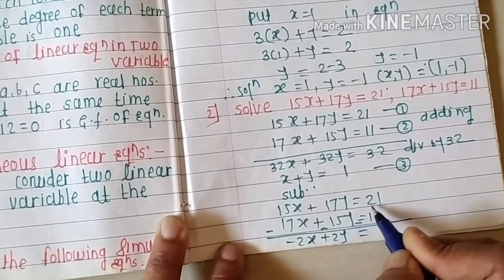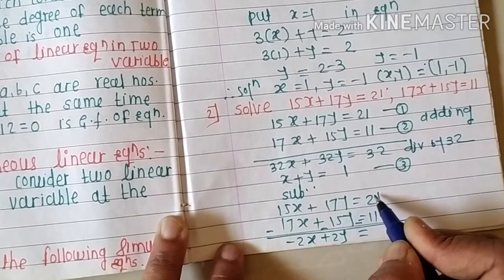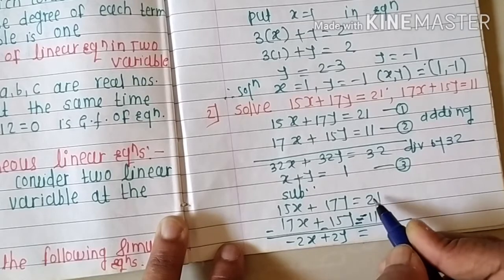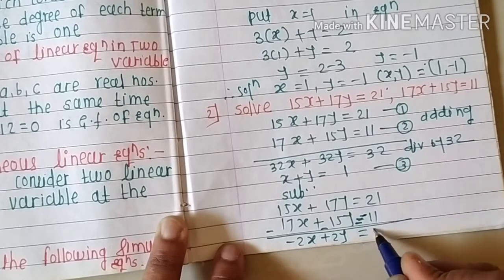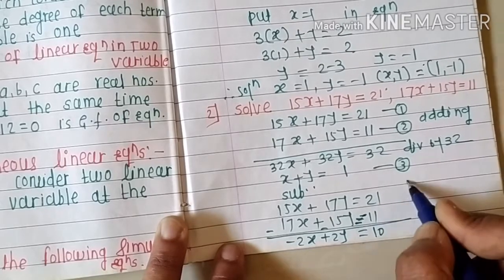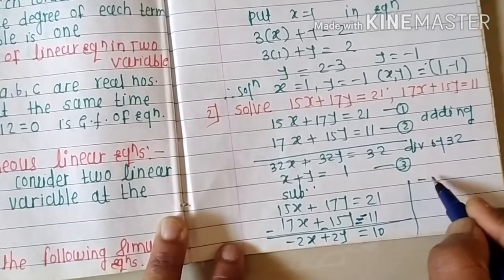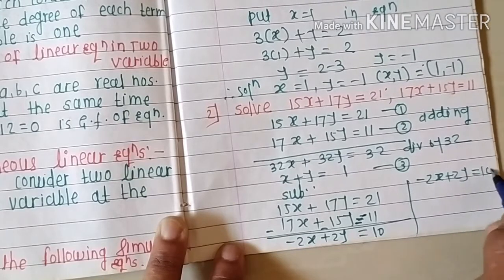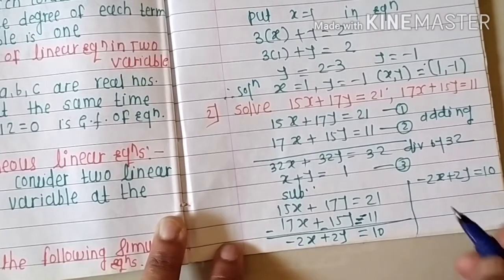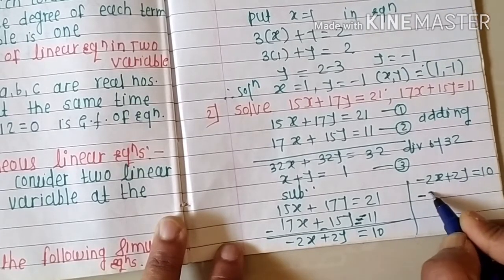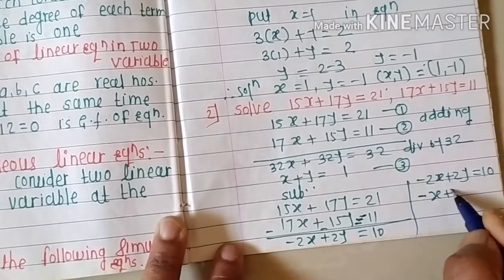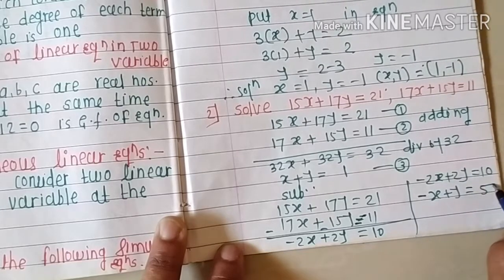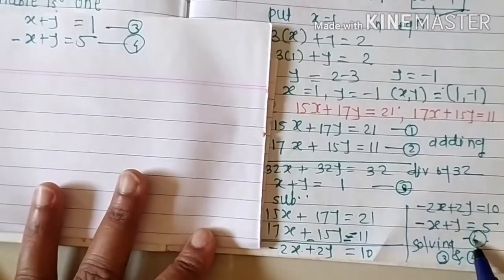After subtraction we get minus 2x plus 2y equals 10, which is divisible by 2. Dividing gives minus x plus y equals 5 — call this equation four.